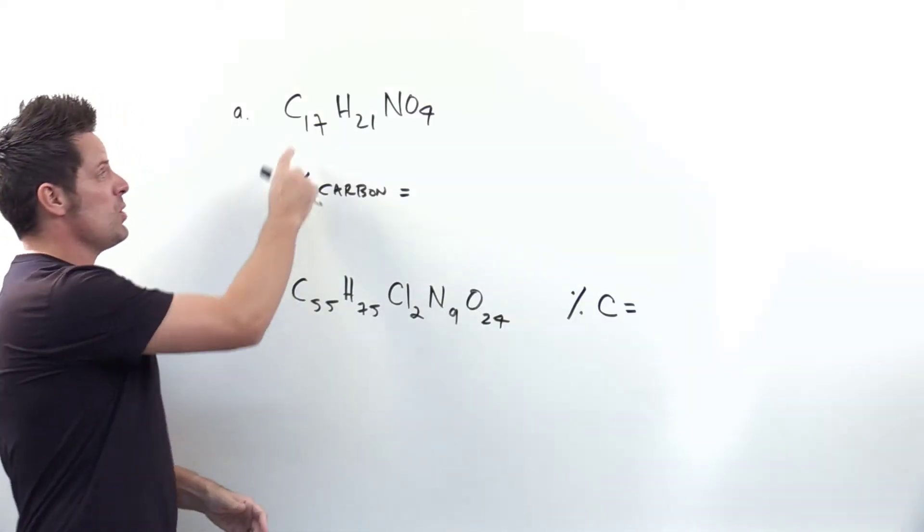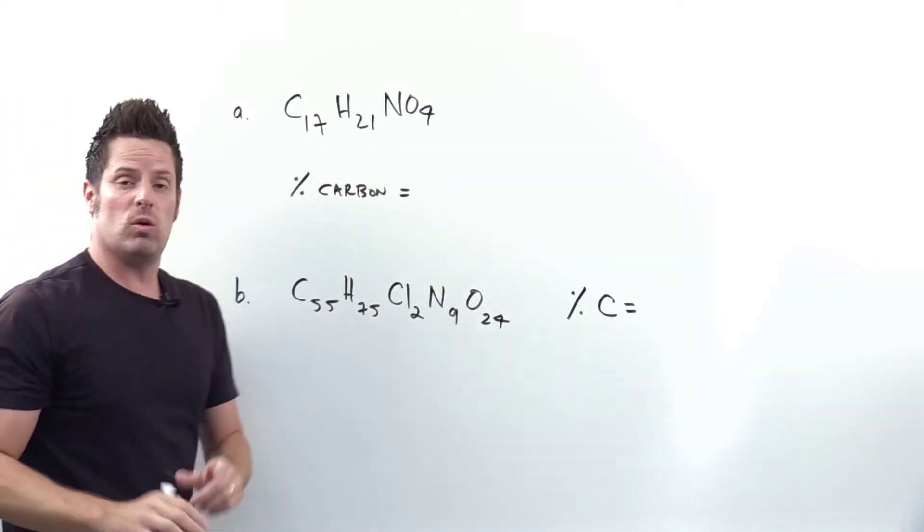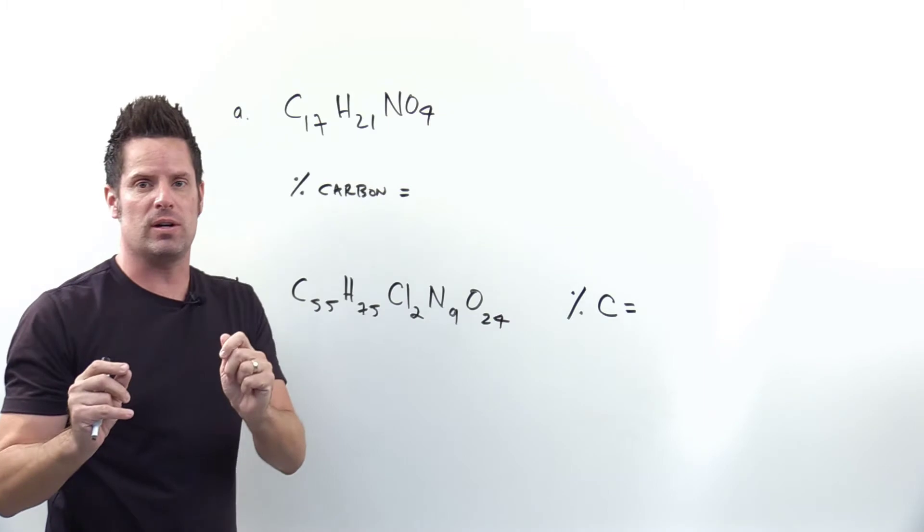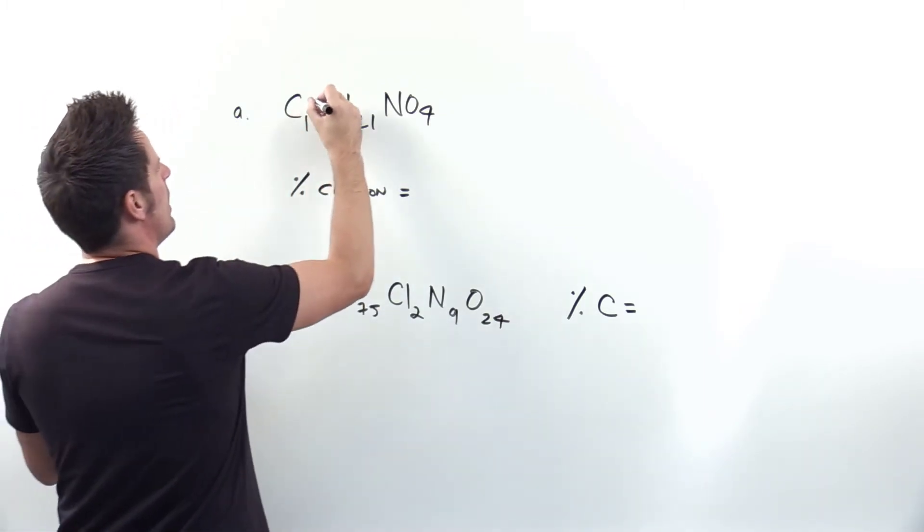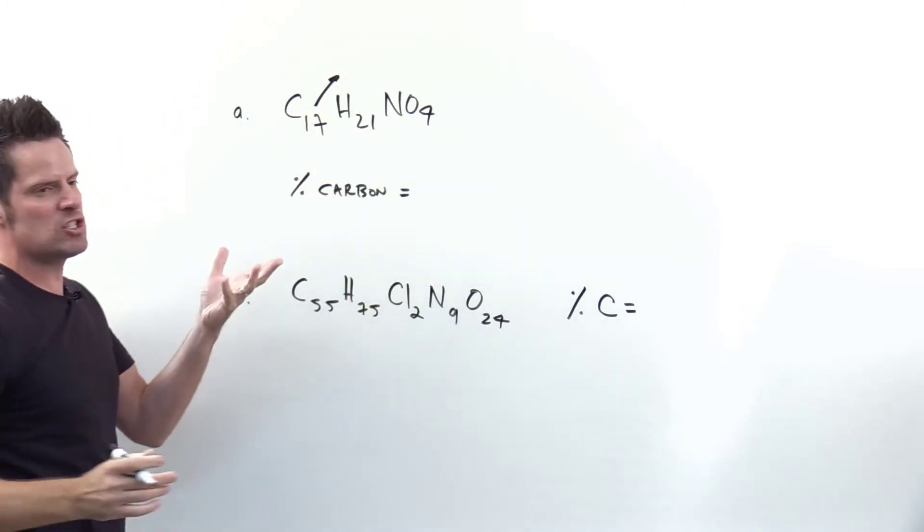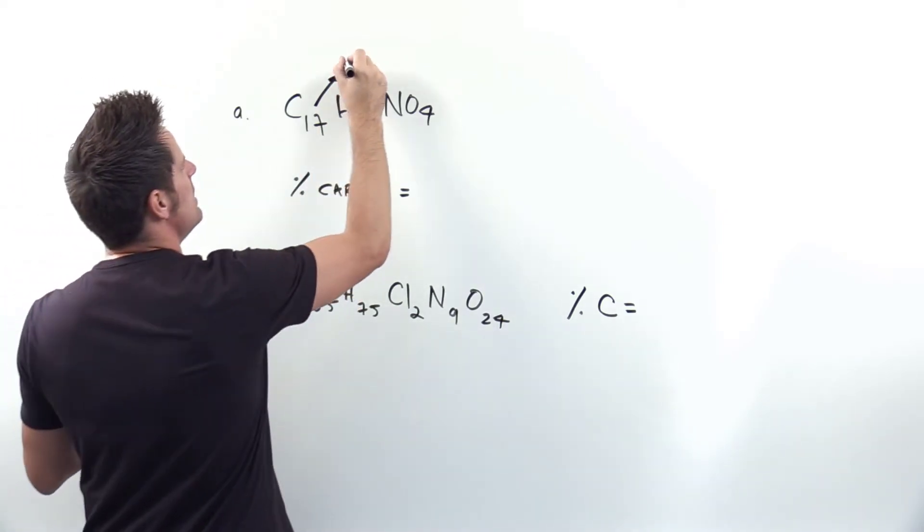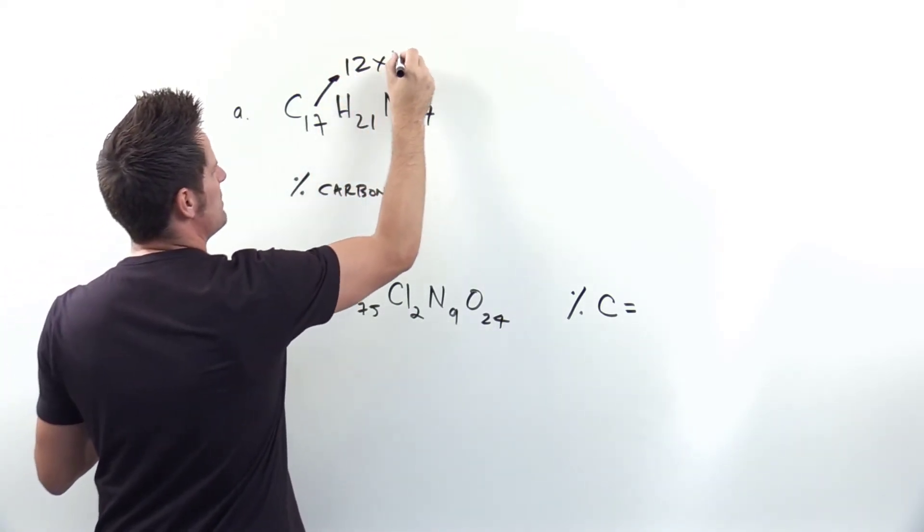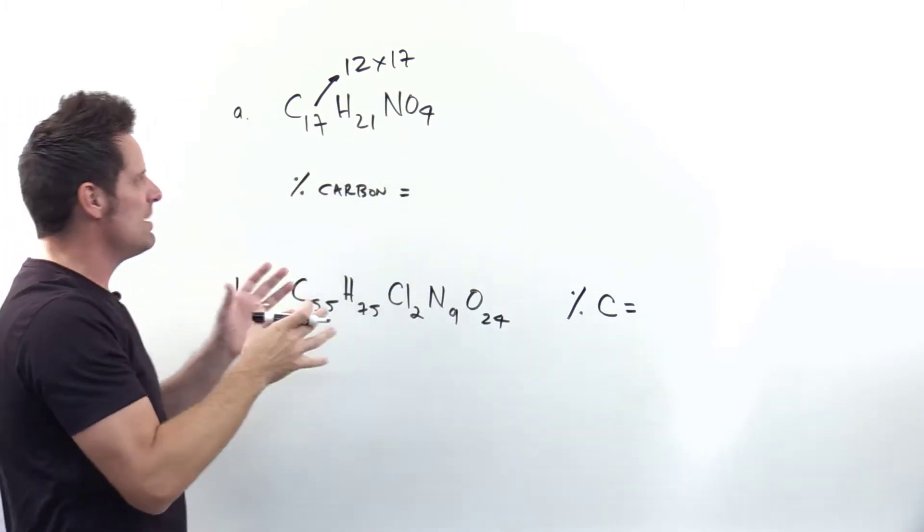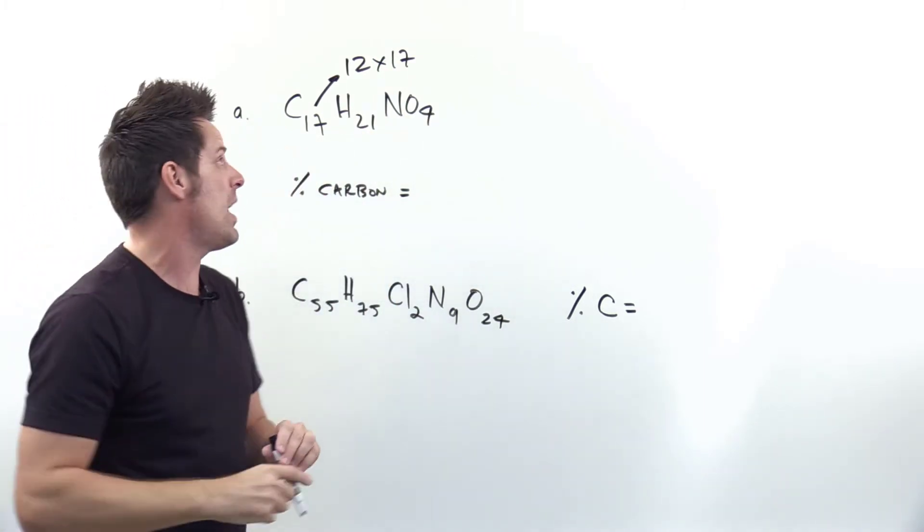So let's start with A, cocaine whose formula is up here. Now cocaine, each molecule weighs a certain amount. What amount is that? Well you have to do the math here. Each carbon weighs 12 and I'm rounding. It's not the exact atomic weight of carbon but I'm just rounding. So the molecular weight is going to be 12 times 17 because there's 17 carbon atoms in one molecule of cocaine and each one weighs 12.